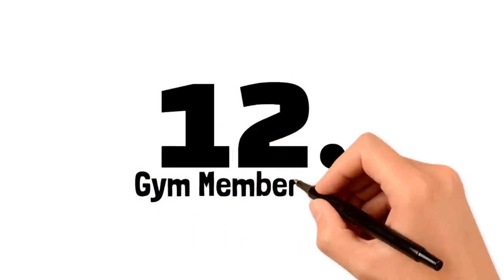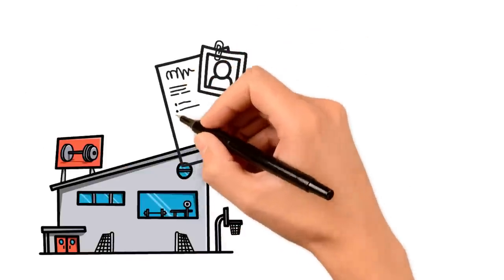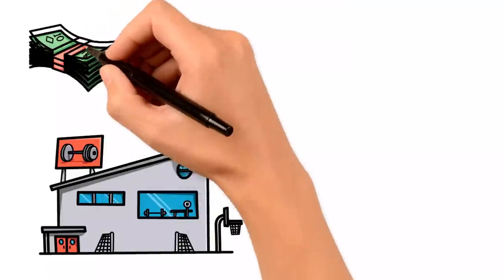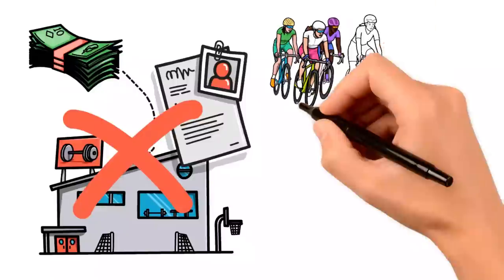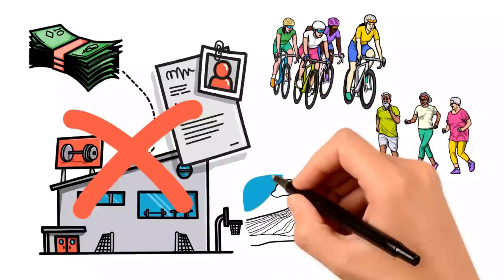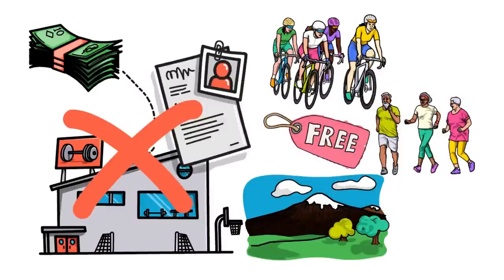Number twelve, gym memberships. If you're not going to make the gym your second home, and you dive headfirst into a monthly fee without actually being all-in on that sweat life, that membership card is just an expensive bookmark. If cash is tight and you're just not ready to commit, why not find free ways to flex those muscles? You can engage in a morning jog, a brisk walk, or an adventurous hike to get in shape.